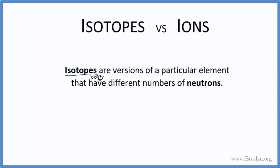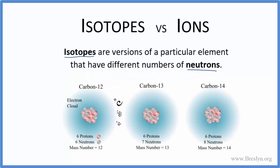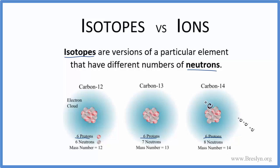When we're talking about isotopes, these are versions of a particular element that have a different number of neutrons. So the key is different number of neutrons. For example, we have three atoms here, and each one is carbon, because it has six protons — that's the atomic number for carbon. It kind of defines what carbon is. They're all carbon: we have carbon-12, 13, and 14.